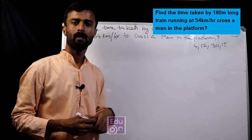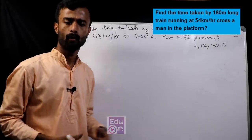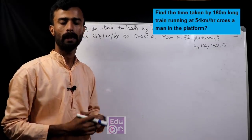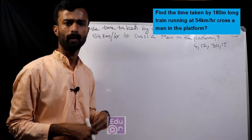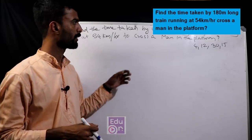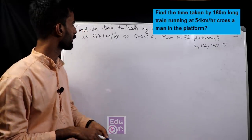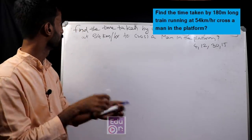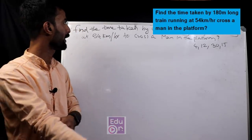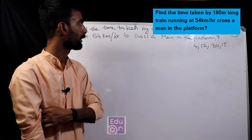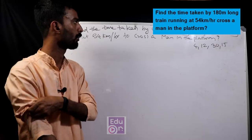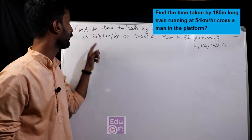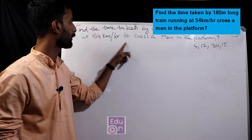My friends, I've covered some questions. Now a train-related question: Find the time taken by a 180-meter long train running at 54 km per hour to cross a platform.